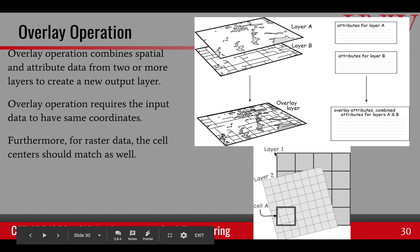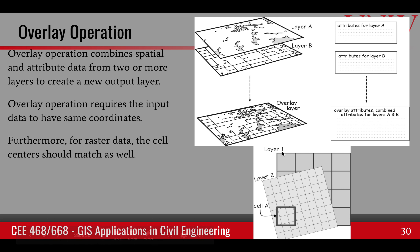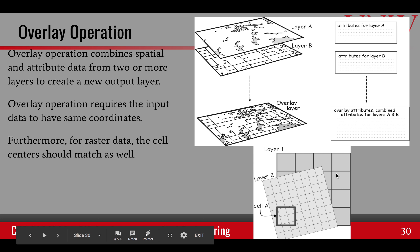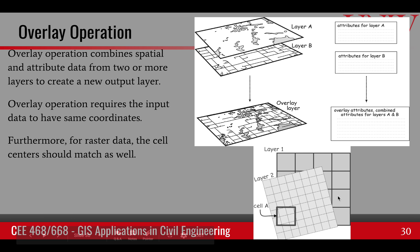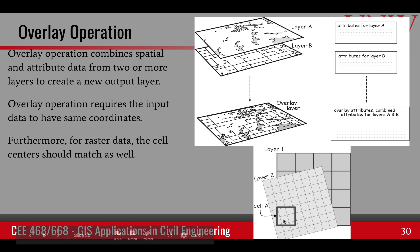Here is an example where layer 1 and layer 2 are of different resolution and even different orientation. In this case, an overlay cannot be performed in the current condition. These data sets can be processed to bring them to a form where an overlay operation can be performed.